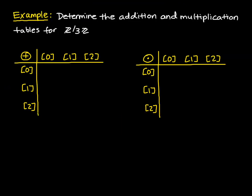One thing that you'll be asked to do in your homework exercises, in particular, is to determine the addition and multiplication tables for a given ring. So let's look at Z mod 3Z. Let's first work on the addition table.